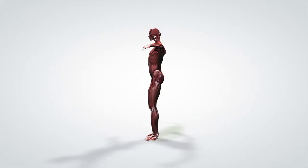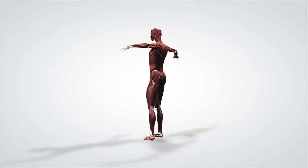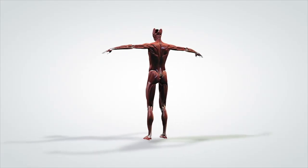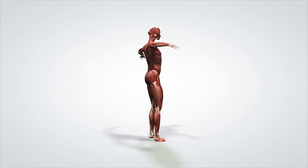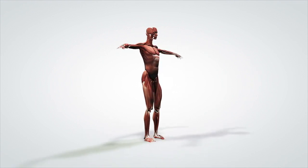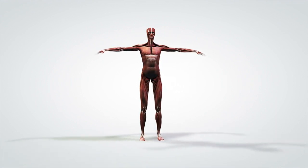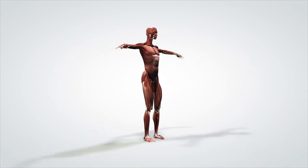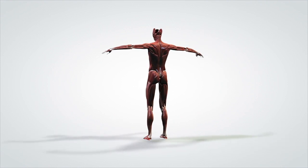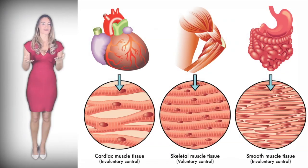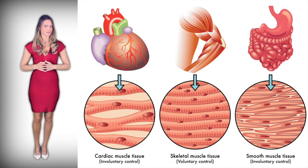Alright, let's get right into it. Did you know that muscles make up about half of your body weight? Without muscles, we would all literally just be skin and bones. Muscles are composed of three different types of tissues.